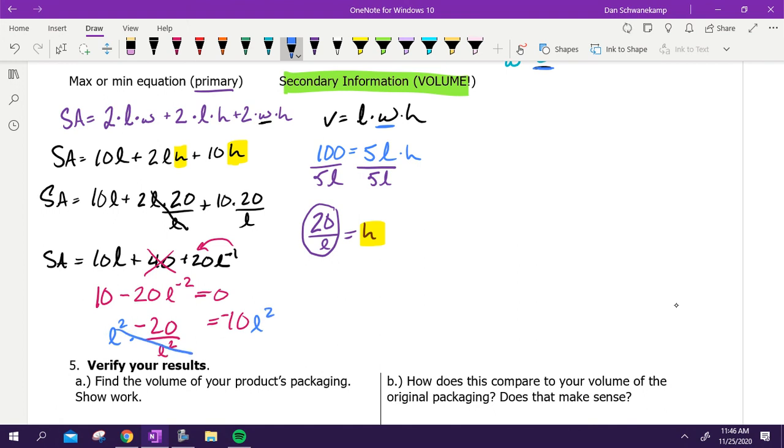I get negative 200 equals negative 10 L squared. Divide by negative 10. That gets me 2 is L squared. So if 2 is L squared, then L is going to be equal to radical 2.